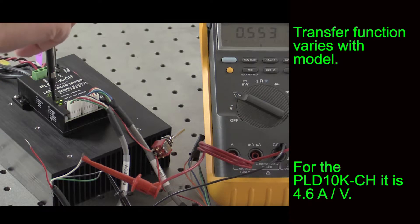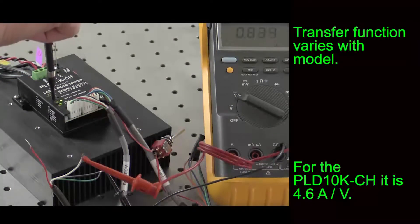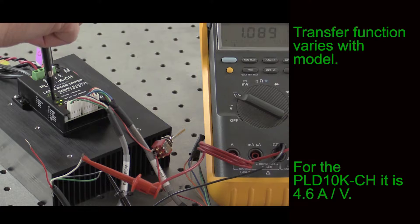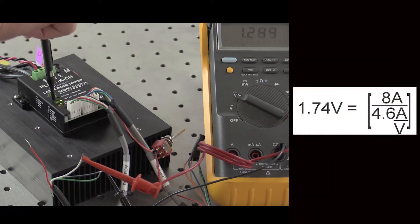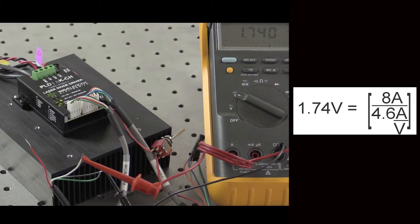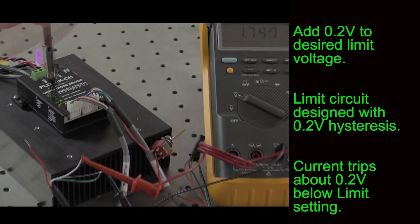For the PLD 10KCH, the transfer function is 4.6 amps per volt. For this example, we want to drive a maximum of 8 amps. Rotate the current limit trim pot clockwise until the limit monitor voltage reads 1.74 volts. The output current will turn off if the driver tries to exceed 8 amps.